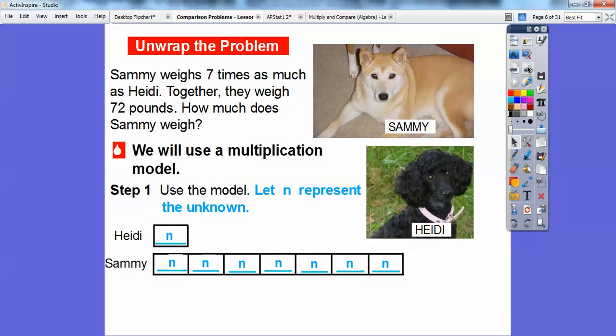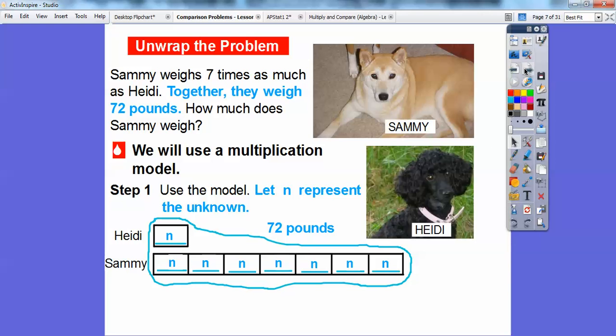We're going to let n represent the unknown. So the statement right here says together they weigh 72 pounds. So I'm going to add up all of these n's right here. All of those n's are going to equal 72 pounds right there. Heidi's weight plus Sammy's weight.